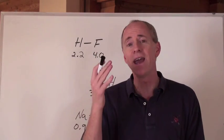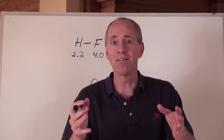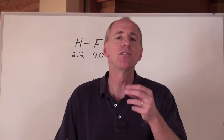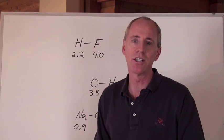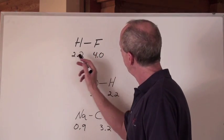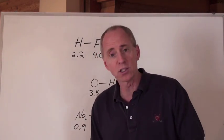Where do you get these numbers from? Any periodic table worth its salt - that's a good chemistry pun - is going to actually have electronegativities listed for you so you can check them. Now, 4.0 to 2.2, there's an electronegativity difference.